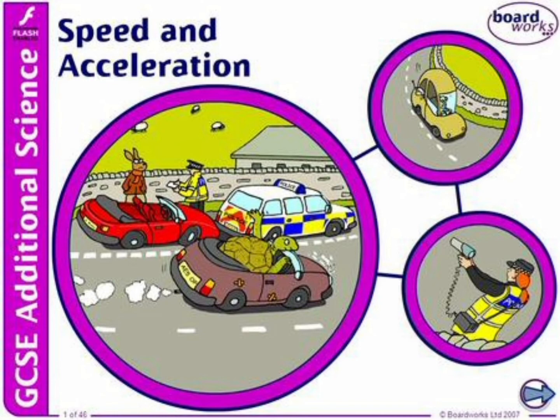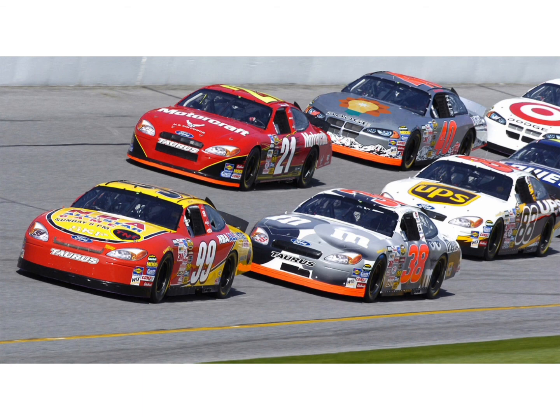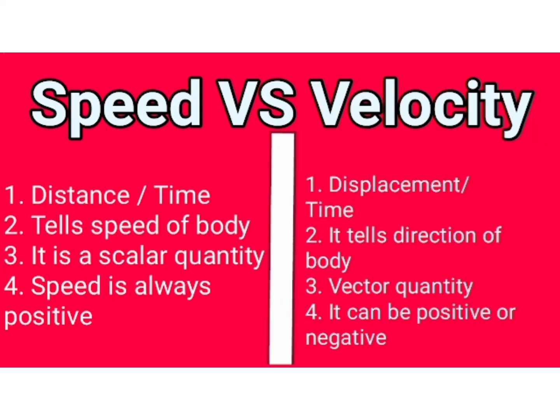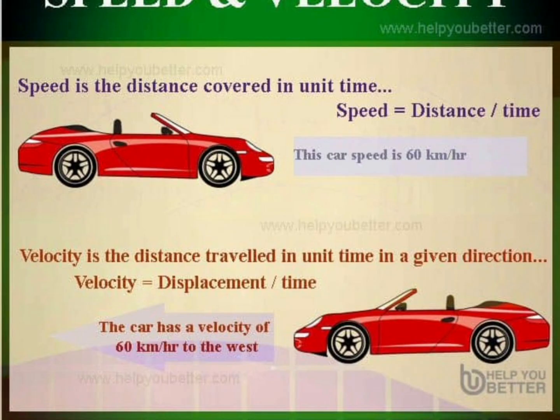When the body moves in a straight line, the speed and velocity will be the same. When its direction changes, they will not be the same. So the average speed of a moving body can never be zero, but the average velocity of a moving body can be zero.